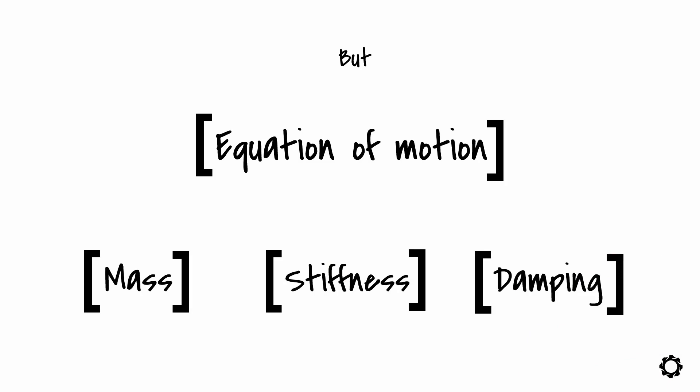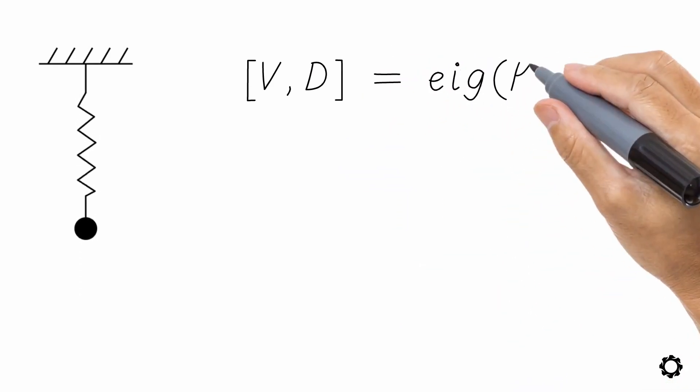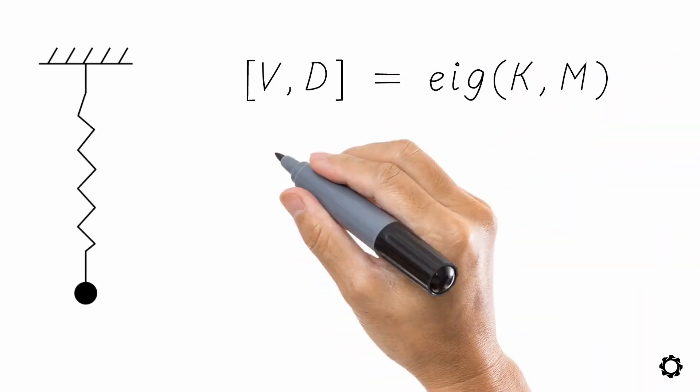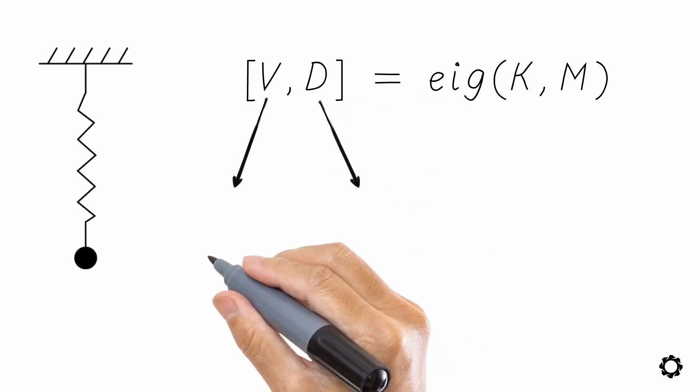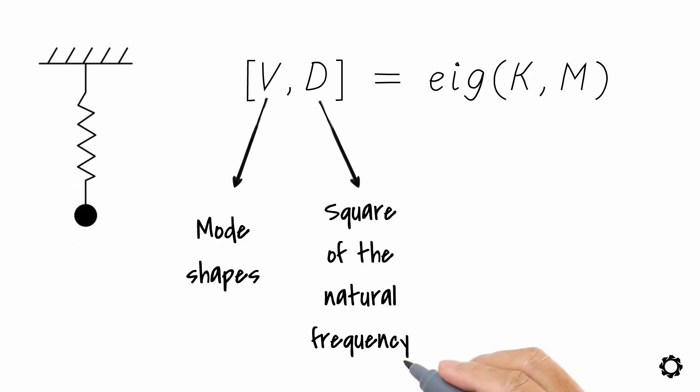For example, considering our friend, the spring-mass system, it would be enough to write the equation [V,D] equals eig(K,M), where V and D are results of the MATLAB function representing the mode shapes and the square of the natural frequency, respectively.